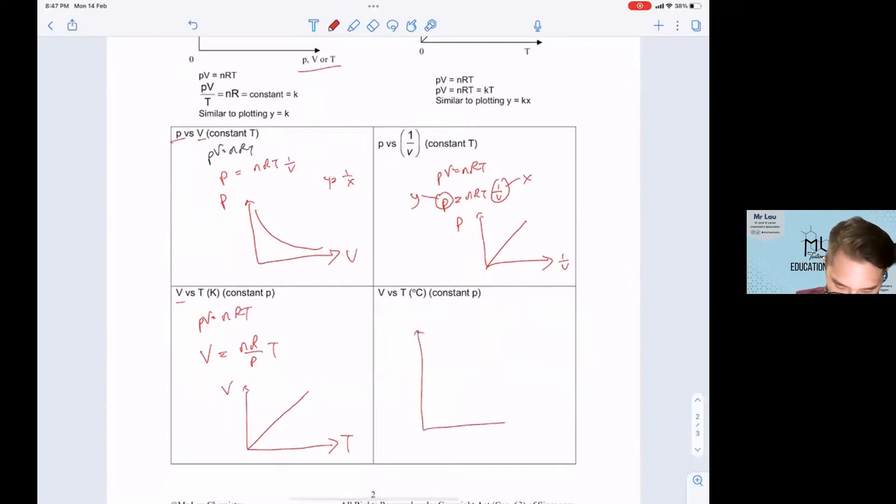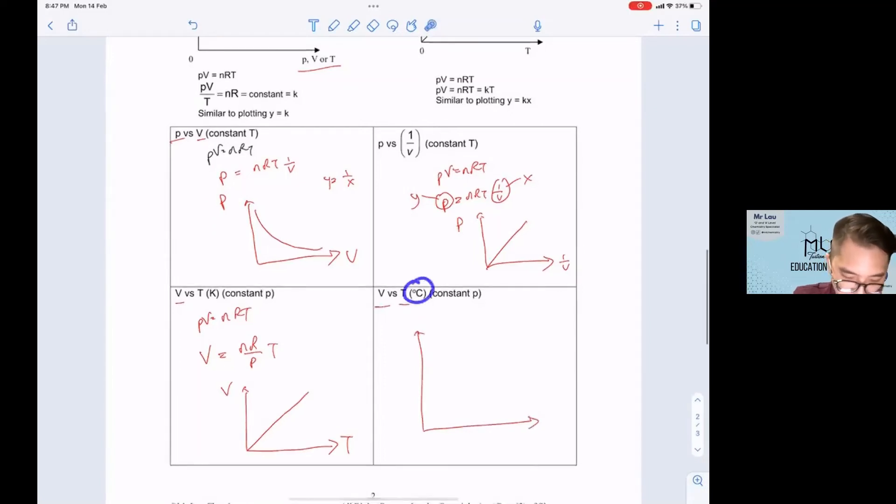One last one. Similar V against T, but this is in terms of degrees Celsius. So PV equals nRT, V equals nR over P times T. This T is in terms of Kelvin. So if I change it to degrees Celsius, this will be T in terms of degrees Celsius plus 273. The temperature in terms of degrees Celsius plus 273 will be your temperature in terms of Kelvin.